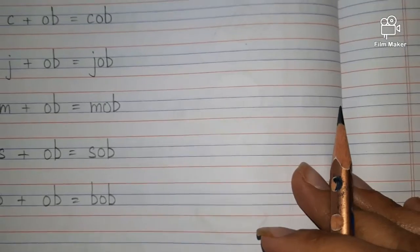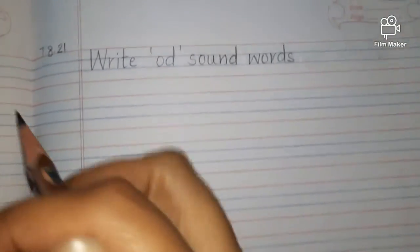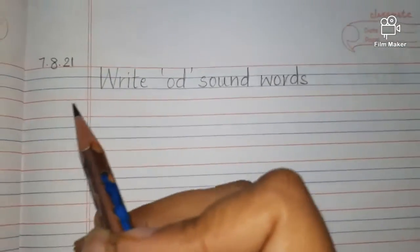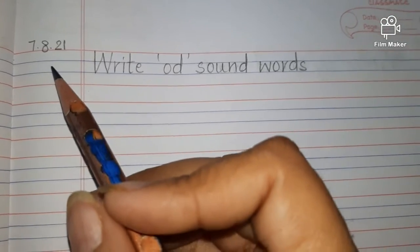After this, come over to the next page. And then again, write down today's date on the top, which is 7th August 2021.